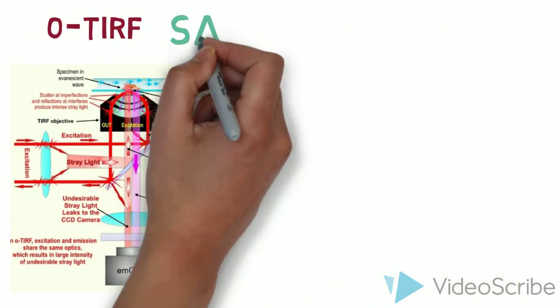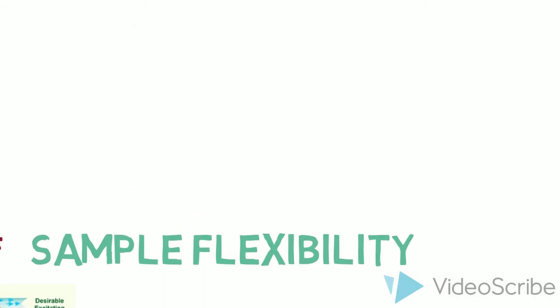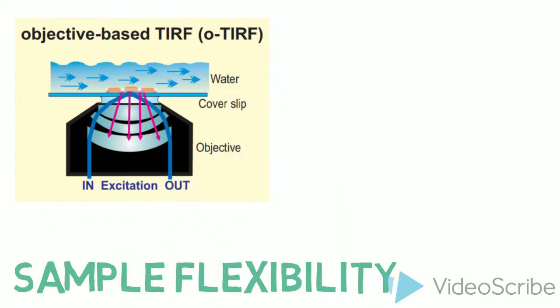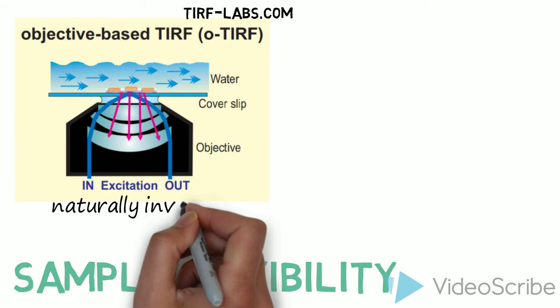When it comes to sample flexibility, O-TIRF has the advantage. The O-TIRF setup is naturally inverted, meaning that the objective can connect nicely with the bottom of the slide through oil immersion. This makes collecting near-field signals straightforward.